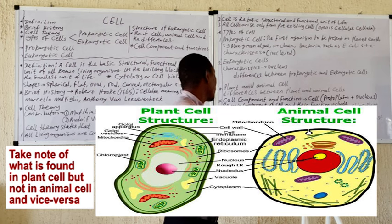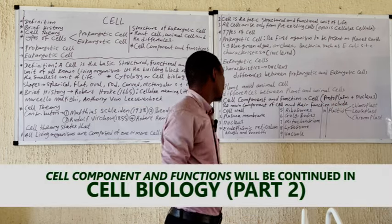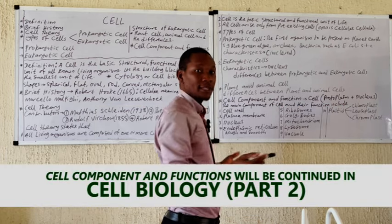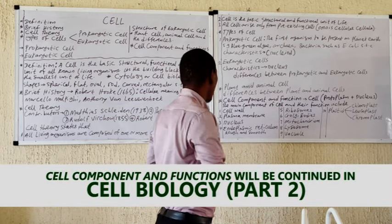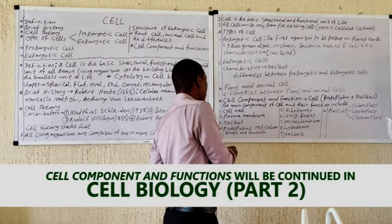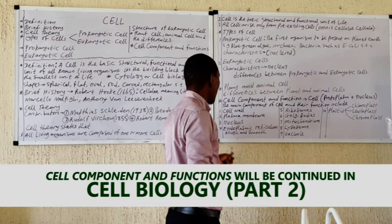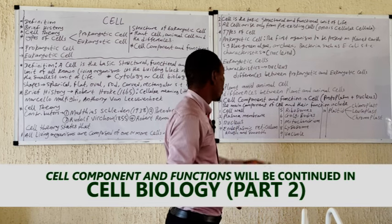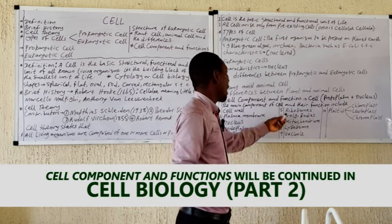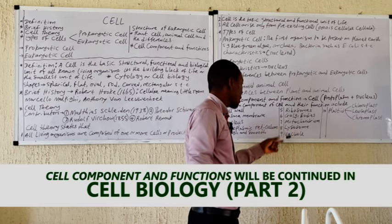We will now talk about the cell components and their functions. The various cell components include the plasma membrane, nucleus, endoplasmic reticulum — which can be rough or smooth — ribosomes, and Golgi bodies.